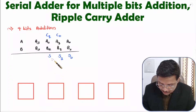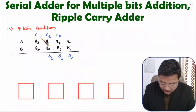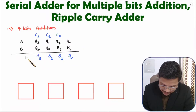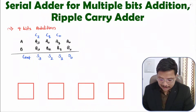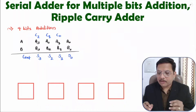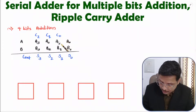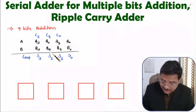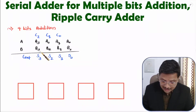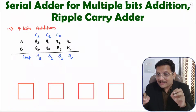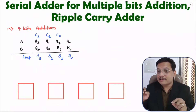Now you add C1, B2, and A2, which results in S2 and the carry is provided to the next stage. That addition results in S3 and the final carry out, Cout. So that is how 4-bit addition is performed. First we add A0 and B0, generating carry, which we add with A1 and B1, generating carry, which we add with A2 and B2, generating carry, which we add with A3 and B3, giving the final carry. Addition is happening in serial manner.